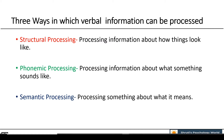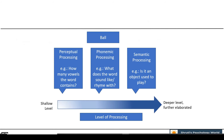Structural means we focus upon the visual or physical characteristics — how things look. Phonemic is when we take into account sounds. And semantic means we take into consideration the meaning of the information. For example, take the word 'ball.' If you are focusing on structural processing, you ask how many vowels the word contains. If you are talking about phonemic, you ask what the word sounds like — does it rhyme with something? This is shallow. When we talk about semantic, we ask, 'Is it an object used to play?' — meaning we are going into a deeper, elaborative level. So this is a continuum from shallow to deep: structural and phonemic are shallow, and semantic is deeper.